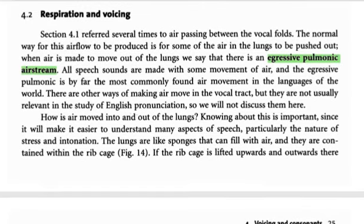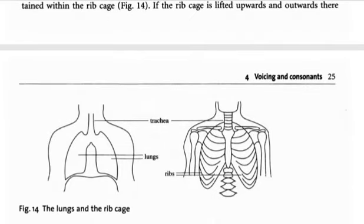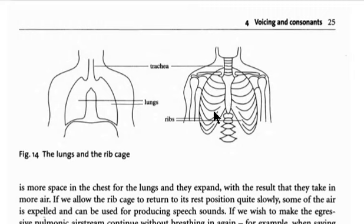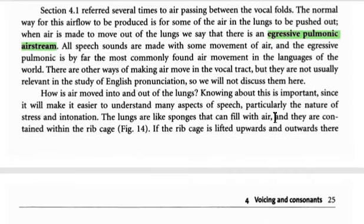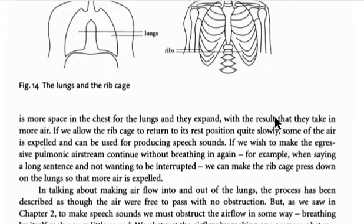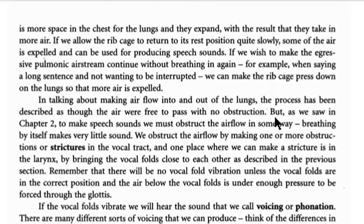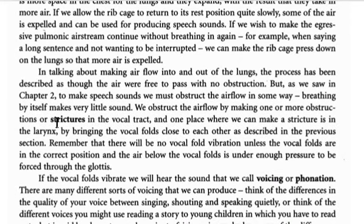The air actually moves by the movement of the muscles in the rib cage. The rib cage tries to squeeze the air out, and the result is what is called the egressive pulmonic airstream. When the air is pushing out from the lungs, it will face certain obstructions — referred to in this textbook as structures — and these structures result in the speech sounds that we use in language.